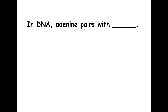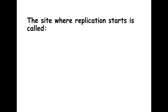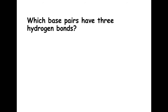In DNA, which base does adenine pair with? In an ideal world without mutations, if you said thymine, you are correct. The site where replication starts is called what? Remember there's one in bacteria and multiple in eukaryotes — if you said origin of replication, you are right. Which base pairs have three hydrogen bonds? Is it AT or GC? If you said guanine and cytosine, you are correct.